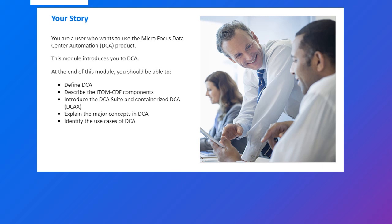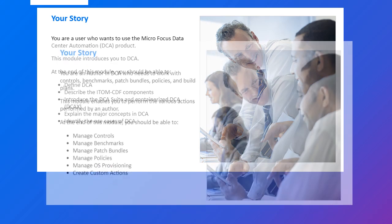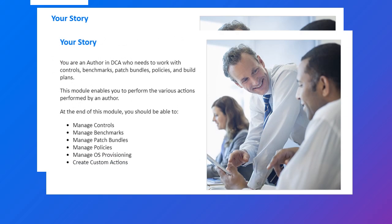Lesson 1 helps you to learn about the architecture and APIs of DCA. Lesson 2 is intended for the author role and provides you an overview of the role of an author in DCA. After the end of this lesson, you can work with controls, benchmarks, patch bundles, policies, and so on.